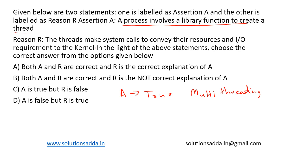Now, Reason R states that threads make system calls to convey the resources and I/O requirements to the kernel. Reason R is also true because threads do make system calls to convey resources and I/O requirements to the kernel. However, while this describes how threads interact with the operating system, it is not evident that R is the proper explanation for Assertion A. So even though both statements are true, R is not the correct explanation of A.